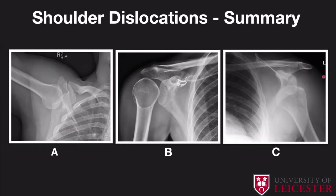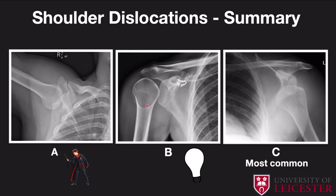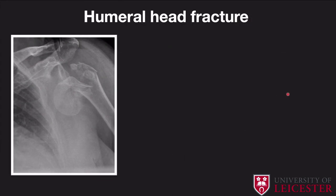In summary of the three dislocation types: luxatio erecta is the inferior dislocation with hyperabduction of the arm. The light bulb sign is the classical finding in posterior dislocation due to internal rotation. The most common — and the one you definitely need to know — is the anterior dislocation of the glenohumeral joint, with inferior displacement. Remember the associated Hill-Sachs deformity and bony Bankart, which is related to the inferior aspect of the labrum.